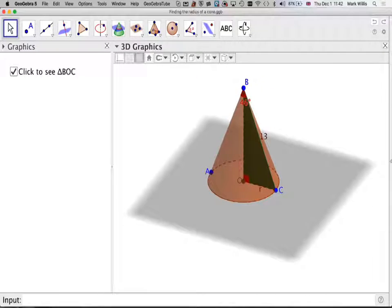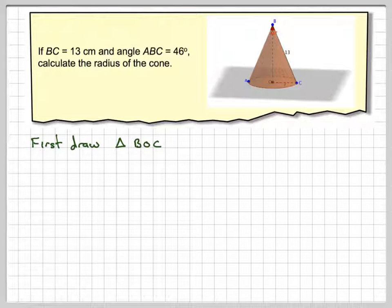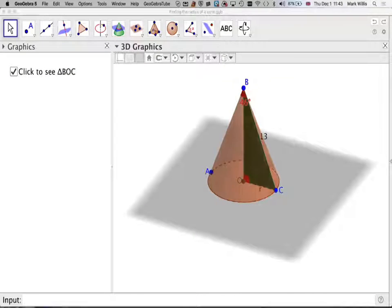Right, so going back to the problem. Now, the secret to doing a problem like this is to draw a two-dimensional diagram of triangle B, O, C. Okay, so we're just going back to that. That's that green triangle here, this one here.